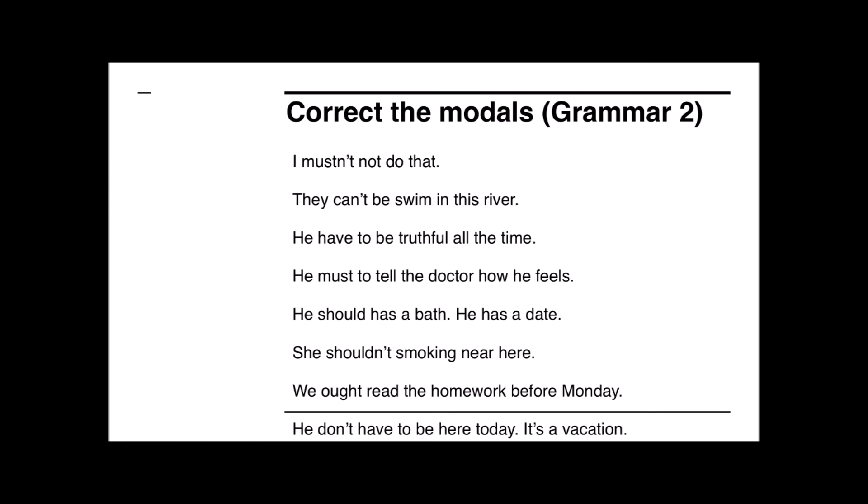Have a look at these incorrect modal sentences and correct them. For example, 'I mustn't not do that' is totally incorrect — it should be 'I must not do that.' 'They can't be swim in this river' — the 'be' shouldn't be there — it should be 'they can't swim in this river.' Pause the video and try to answer these questions. Thanks for listening and I'll talk to you in class. Bye.